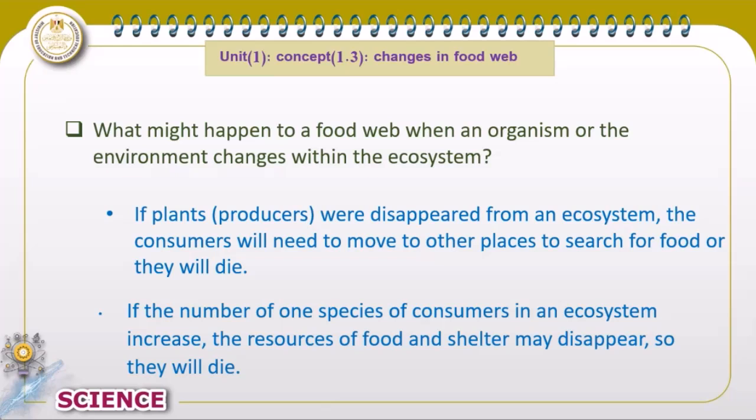What will happen to the food web when any organism changes? If the producer disappears — if there is a change in the organisms in the food web — there is no producer, so there is no food, so the consumer will move to another place to search for food. If the number of one species like the consumer increases, the resources of food will not be enough for them.